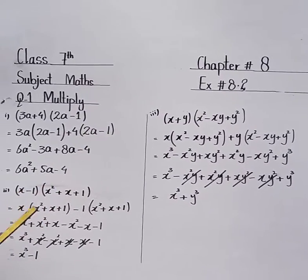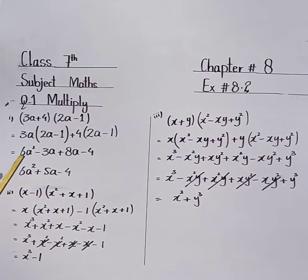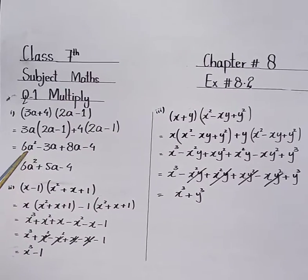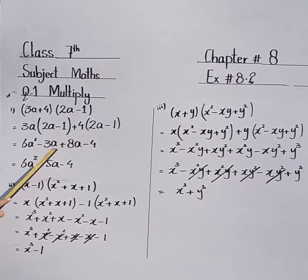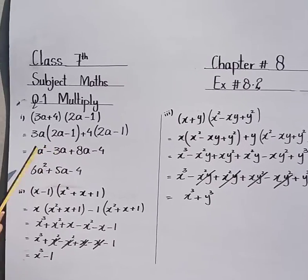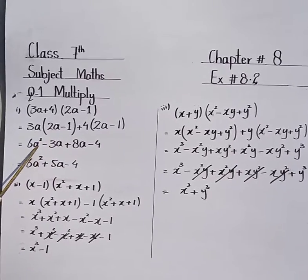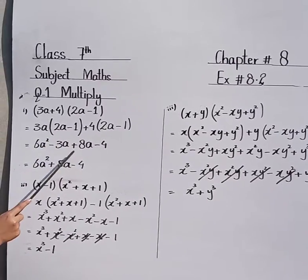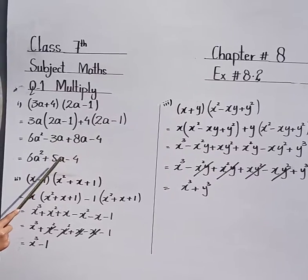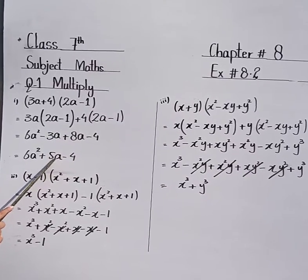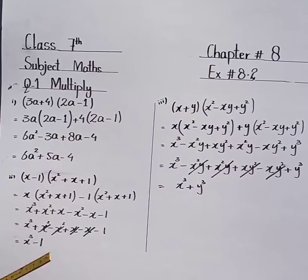Now we will simplify. 6a squared remains the same because there is only one term of a squared. Then minus 3a plus 8a gives 5a, minus 4. So the answer is 6a squared plus 5a minus 4.